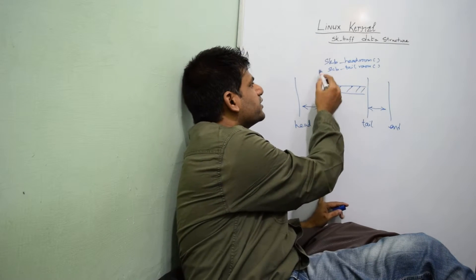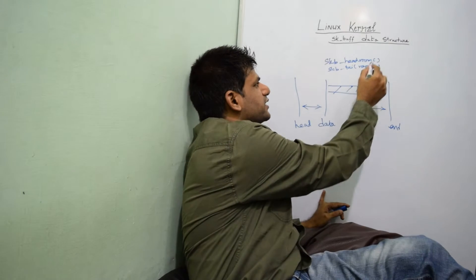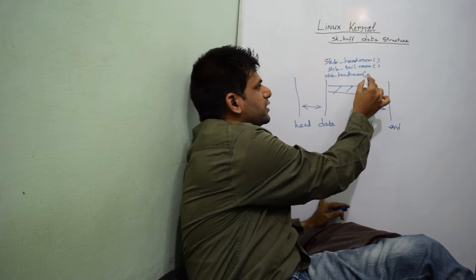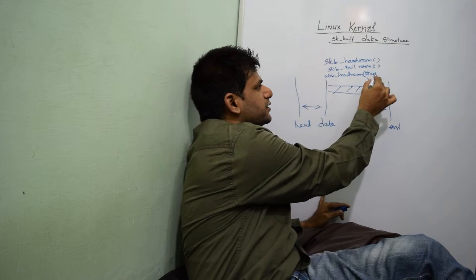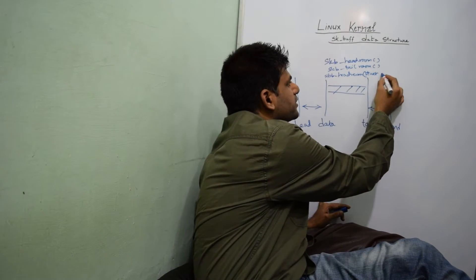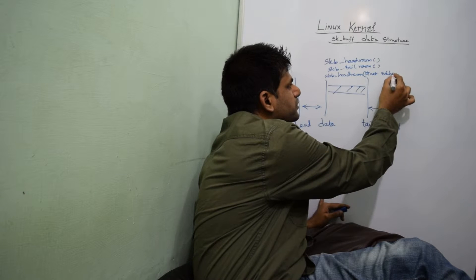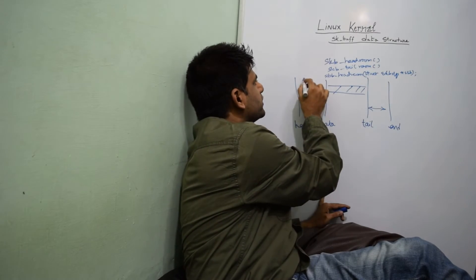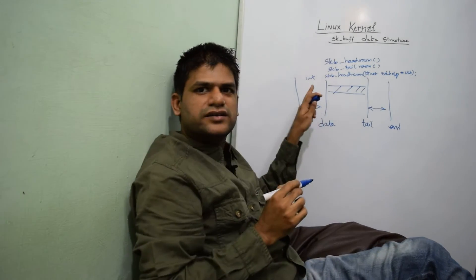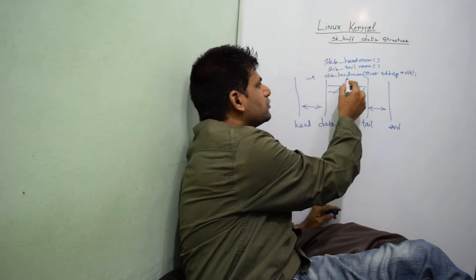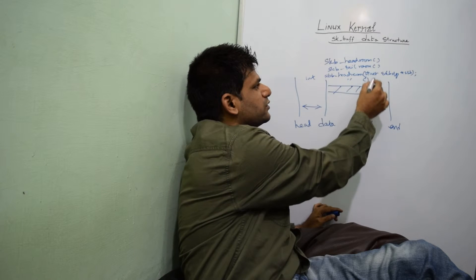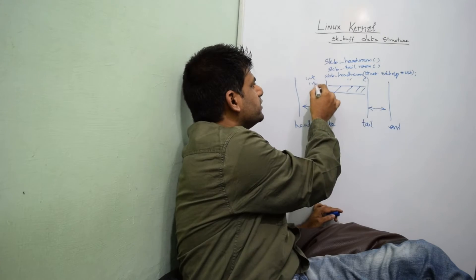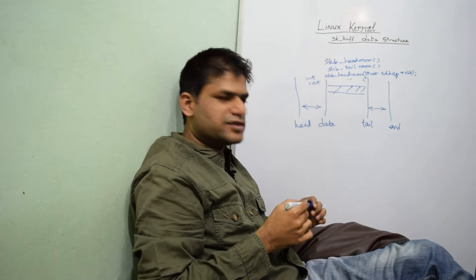The API prototype is SKB Headroom, which takes, like any other SKB API, the instance of the SKBuf pointer SKB, and it returns an integer which is the length of the headroom left. Similarly, SKB Tailroom has the same signature — it takes the SKB instance pointer and returns an integer of the number of bytes left as part of SKB Tailroom.